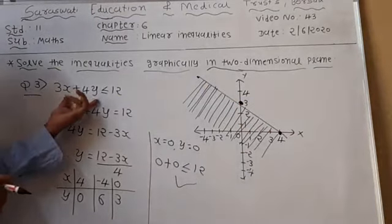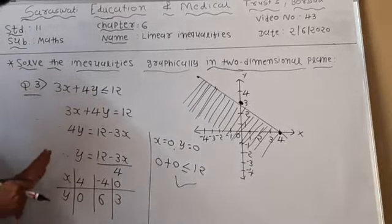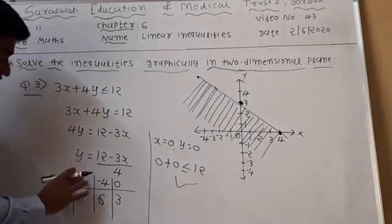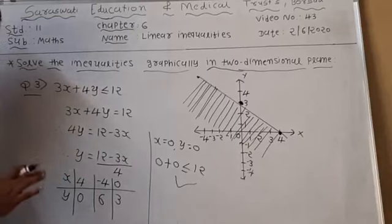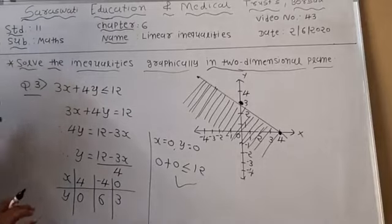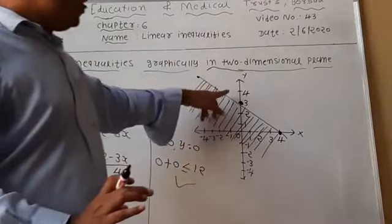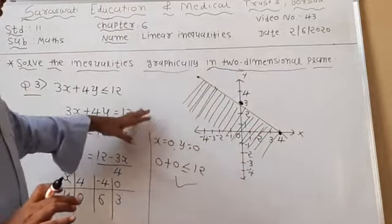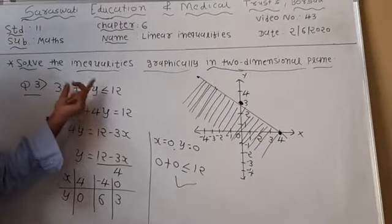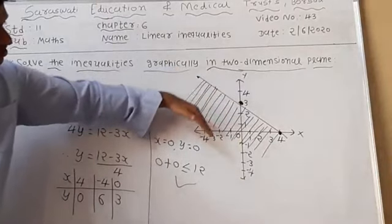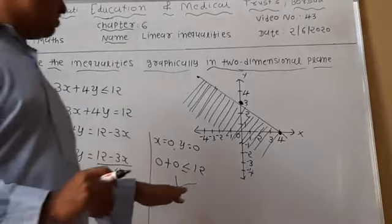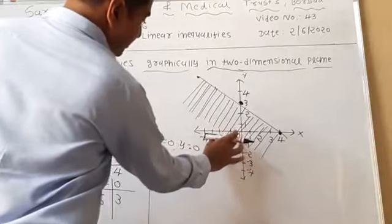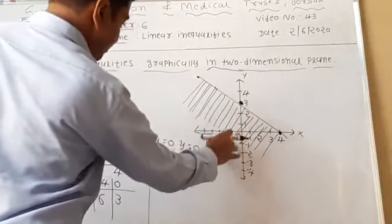To summarize the method: convert the equation to y-form, substitute values of x to find ordered pairs, plot at least two points in the XY plane, join them with a line, then substitute x equal to 0 and y equal to 0 into the original equation. If the condition is satisfied, shade the origin side; otherwise, shade the opposite side of the origin.